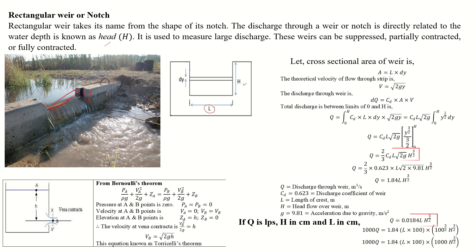Now let us consider a small amount of water flowing over the rectangular weir. This is dy — a small strip. The total area of this strip is simply length into width, that is area equals length into width.